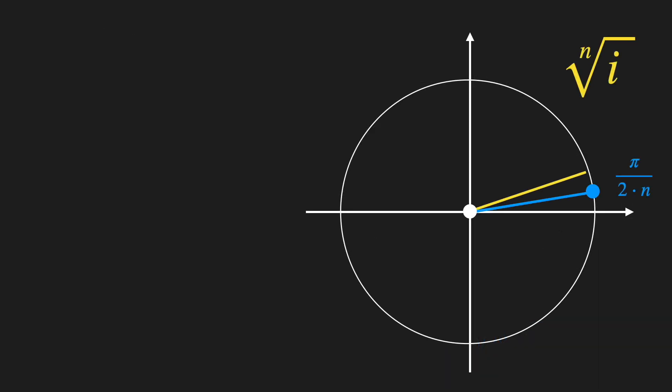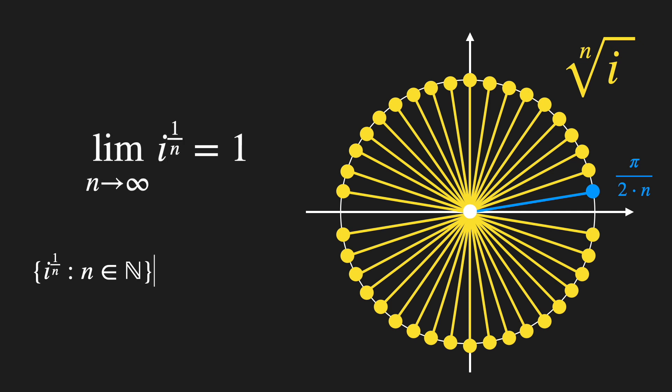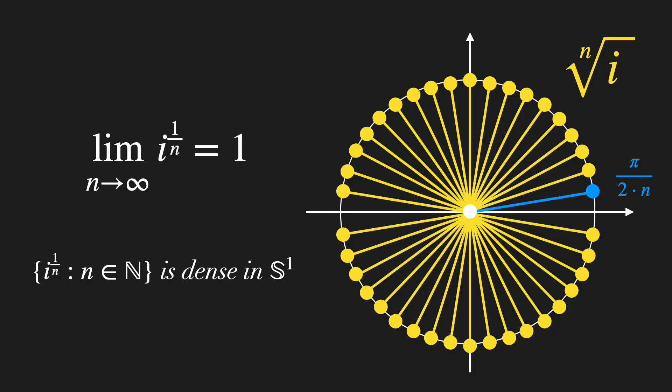Extending this logic, we can convince ourselves that the nth root of i is a set of points on the unit circle, starting at pi over 2n, splitting the circle into equal-sized slices. Some unanswered questions include: what is the angle between solutions in terms of n, and do even and odd n produce distinct patterns? What happens if n is negative or irrational? These are nice challenges to try to prove. An important observation is that the set of all solutions for all natural n is dense in the unit circle — not meaning all points belong to this set, but that they are dense in it. Check the PDF for more details. I hope you liked this video — see you next time!